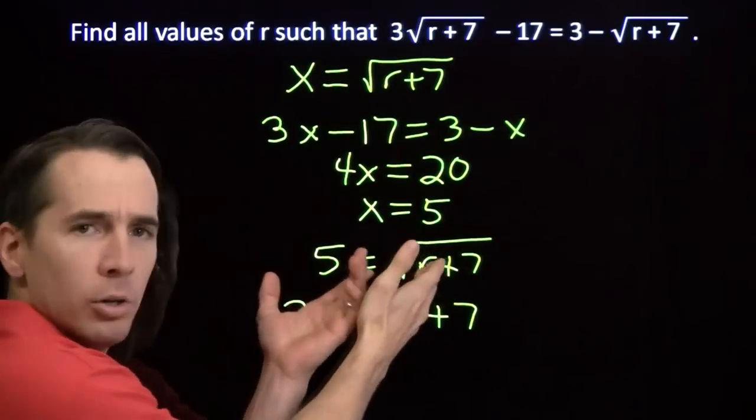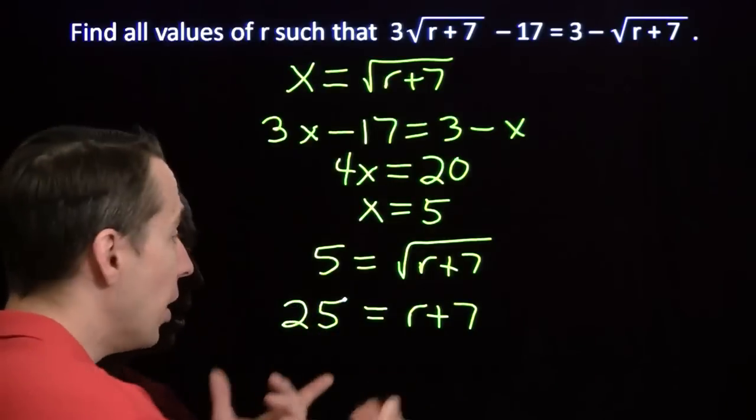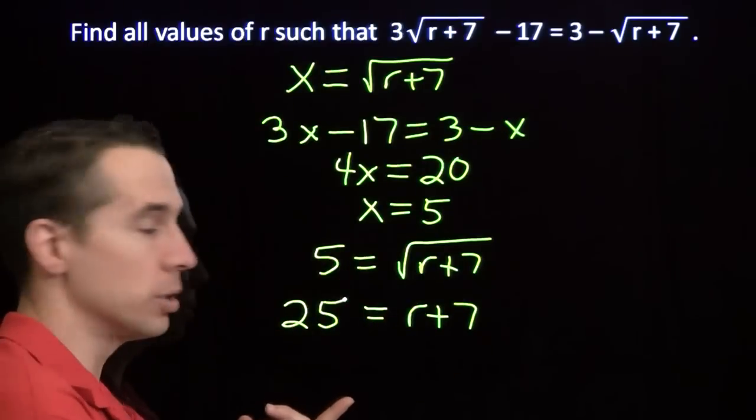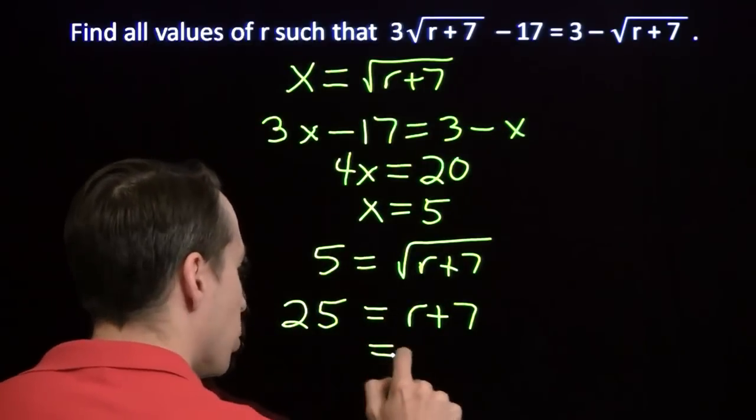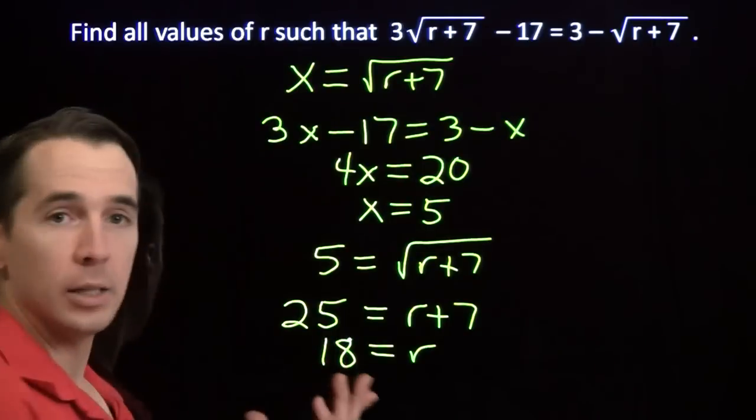Because we know that the number whose square root is 5 is 25. Because you square 5, you get 25. So r plus 7 must have been 25 in order to make this equation true. And we just subtract 7 from both sides. And we get r equals 18.